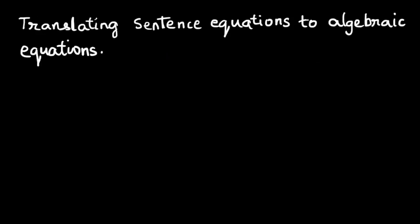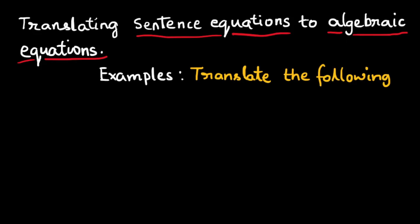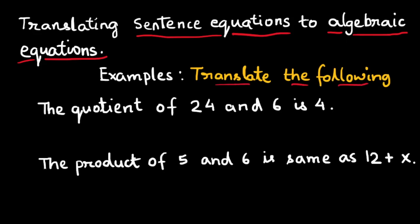Sometimes you get sentence equations and asked to translate them into algebraic equations. For example, translate the following. The quotient of 24 and 6 is 4. The product of 5 and 6 is same as 12 plus x.